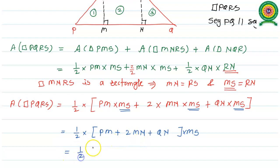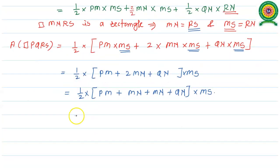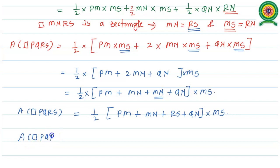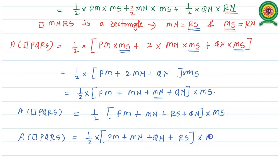Now two times MN can be split as MN plus MN. We replace one MN value by RS. So the area of quadrilateral PQRS equals half times PM plus MN plus RS plus QN, whole into MS. Using the associative property of addition, we can write area of quadrilateral PQRS equals half times PM plus MN plus QN plus RS, whole into MS.